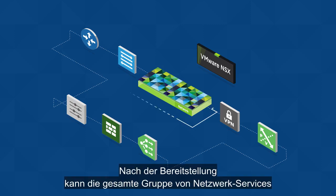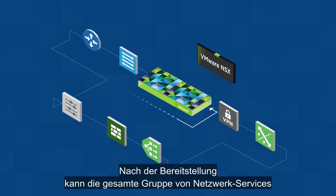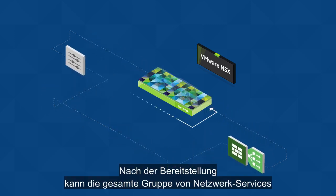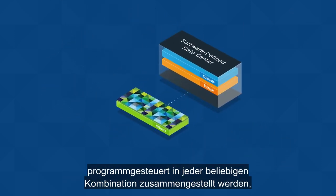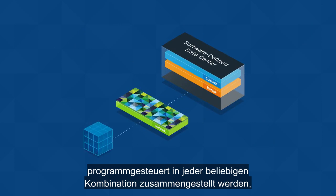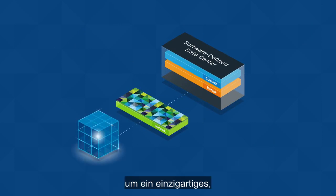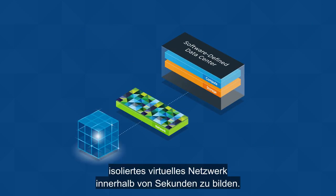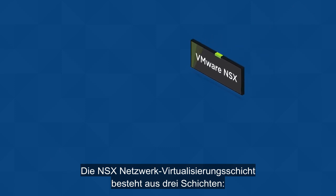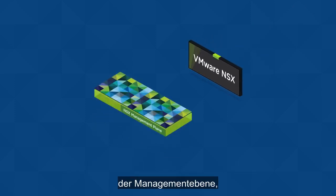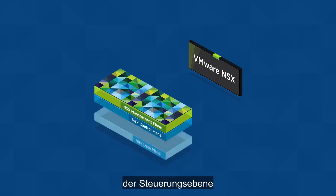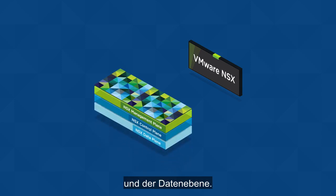Once deployed, the full set of network services can be programmatically assembled in any arbitrary combination to produce unique isolated virtual networks in a matter of seconds. The NSX network virtualization layer is divided into three layers: the management plane, the control plane, and the data plane.